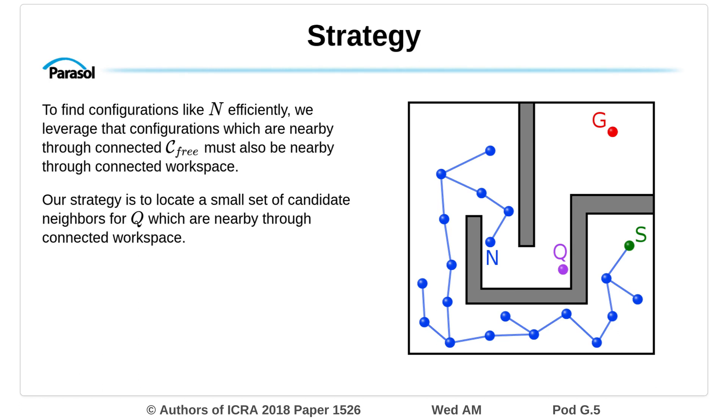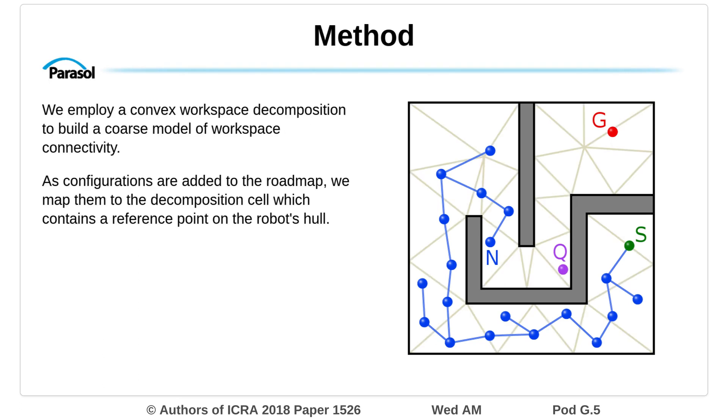Our strategy is to locate a small set of candidate neighbors for Q which are nearby through connected workspace. We employ a convex workspace decomposition to build a coarse model of workspace connectivity. As configurations are added to the roadmap, we map them to the decomposition cell which contains a reference point on the robot's hull.